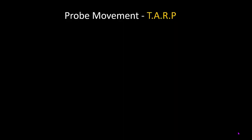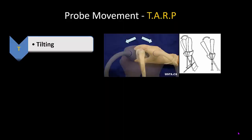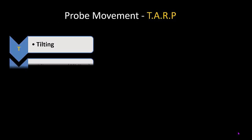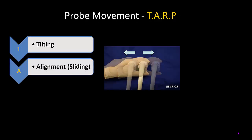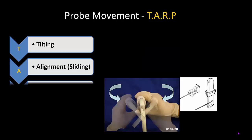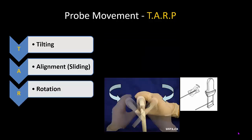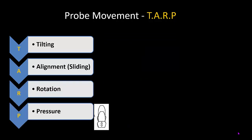There are four basic probe movements. The first is tilting, or rocking the probe, as illustrated here. The next is sliding, which is the key movement for needle-beam alignment, rotation of the probe, and downwards pressure.